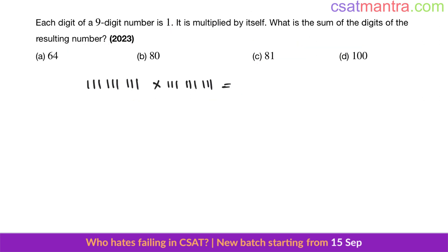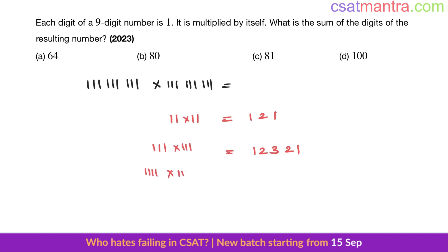Another very important way to solve this problem — you must learn this. When you multiply 11 by 11, you get 121. Triple-one into triple-one gives 1, 2, 3, 2, 1. And 1111 into 1111 gives 1, 2, 3, 4, 3, 2, 1.